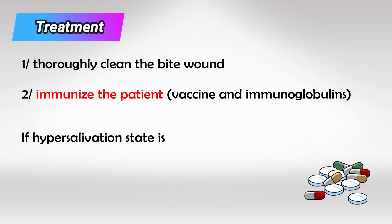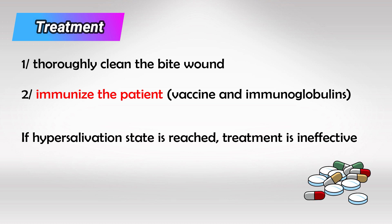One of the cut-off points for treatment is that if the patient has started the hypersalivation status, then the vaccines and immunoglobulins are pretty much ineffective. Because for the patient to hypersalivate, the virus has to travel all the way to the brain and then disseminate throughout the brain and reach the nerves even outside the brain, including the salivary glands — and that's why they hypersalivate. So if it reaches this stage, the condition is untreatable.